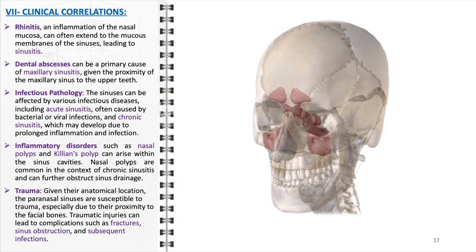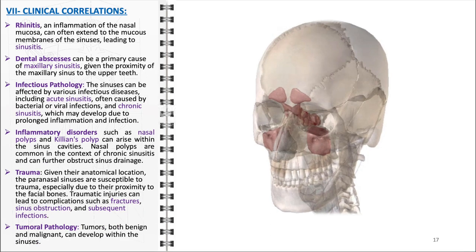Given their location, the paranasal sinuses are also susceptible to trauma. Traumatic injuries, especially those affecting the facial bones, can lead to complications such as fractures, sinus obstruction, and subsequent infections. The impact of trauma on the sinuses can range from minor to severe, with significant implications for breathing, sense of smell, and even vision. Lastly, the sinuses can be affected by tumoral pathology. Tumors, whether benign or malignant, can develop within the sinuses, presenting unique challenges in diagnosis and treatment. Malignant tumors, although less common, can be particularly serious due to their potential to invade nearby structures and spread to other parts of the body.